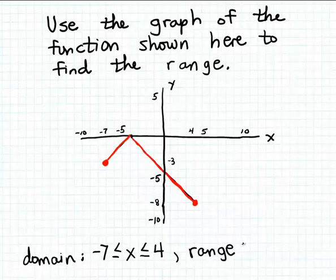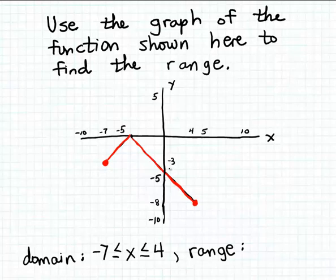The range is the set of output values for the function, as opposed to the set of input numbers. Now in trying to determine the range, it's very easy to be misled by the way the graph is drawn and want to focus your attention on the endpoints of the graph. You might assume that the range would be numbers between minus 3 on the y-axis — the y-coordinate of the left endpoint — and minus 8, the y-coordinate of the right endpoint. So you might mistakenly assume the range is numbers between negative 8 and minus 3.